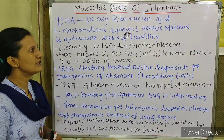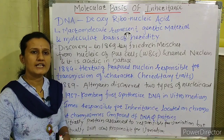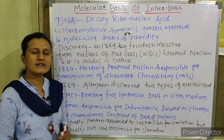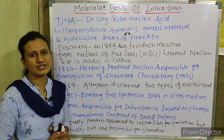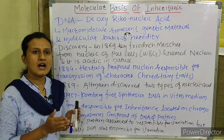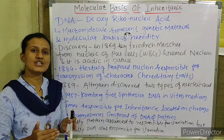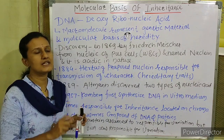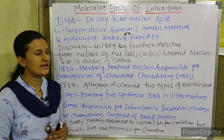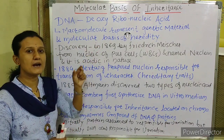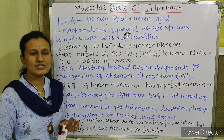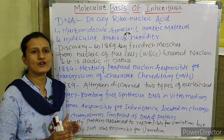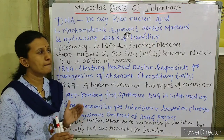What do we mean by inheritance? Inheritance is the mechanism of heredity. It is the process by which a character is transferred from one generation to the next generation. That process, that mechanism, is called inheritance. And that inheritance depends upon a molecule which is known as DNA — exact information about that DNA is what we will study.